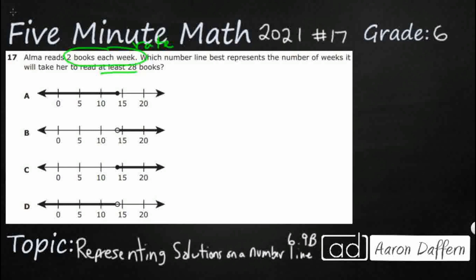Now take a look at all four of these number lines. They've all got a circle — either open or closed — right around 14. Let's see what expressions we can write for A, B, C, and D, where W represents weeks. Number line A shows values less than 14 with a closed circle. A closed circle means we include 14, so A represents W is less than or equal to 14 — any number that's 14 or less.